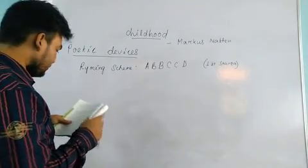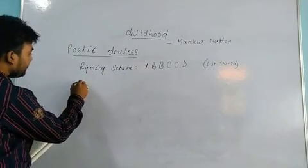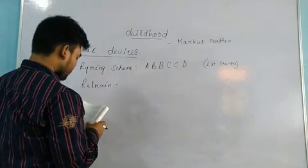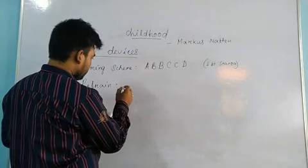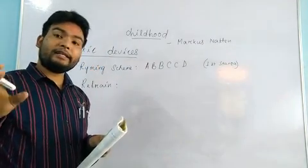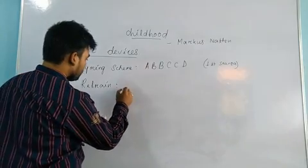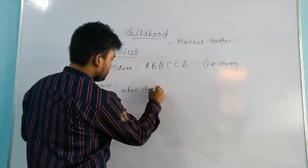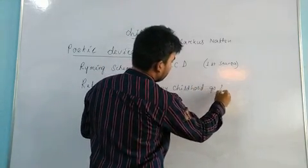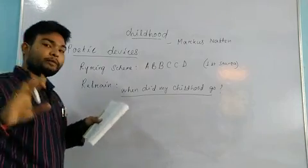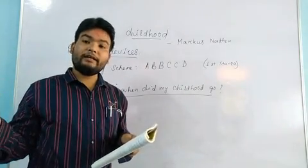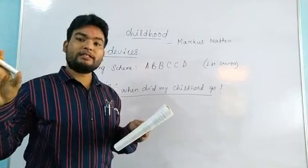Besides the rhyming scheme, the next poetic device is refrain. Refrain means a group of phrases which is repeated in the poem. Here, 'When did my childhood go?' is a phrase that has been repeated many times in the poem, and this is called refrain. If a phrase has been repeated many times in the poem, that is called refrain.